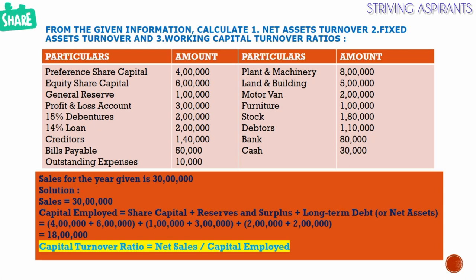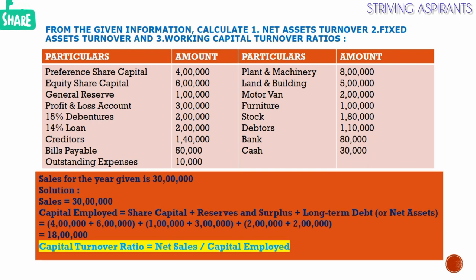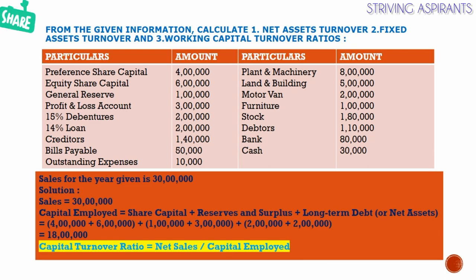First we will calculate capital employed, which equals share capital plus reserves and surplus plus long-term debt. That is: preference share capital 4 lakh plus equity share capital 6 lakh, plus reserves and surplus which include general reserve 1 lakh and profit and loss account 3 lakh, plus long-term debt which constitutes 15% debentures 2 lakh and 14% loan 2 lakh. The total of all these gives capital employed of 18 lakh.